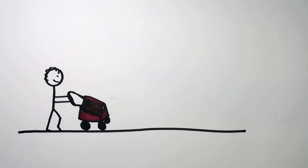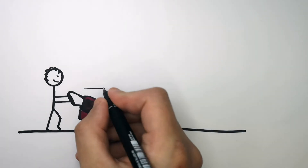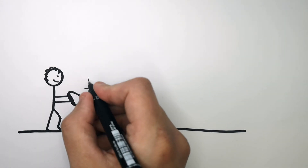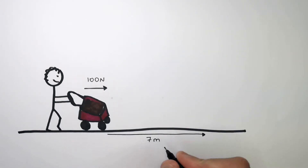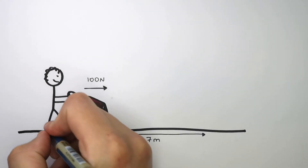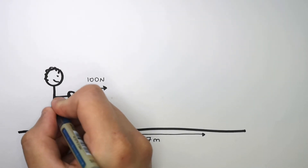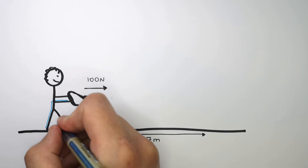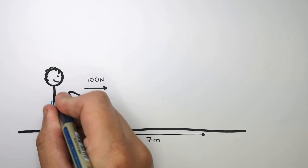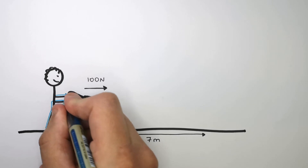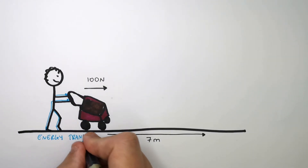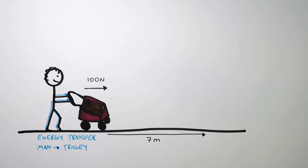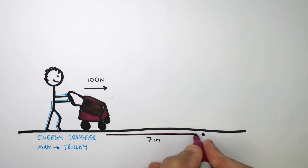This person is pushing a wheelbarrow full of mud. They've applied a 100 newton force to move it 7 meters. To apply a push force to this wheelbarrow, the man needs to transfer energy from his chemical energy store to the kinetic energy store of the wheelbarrow. Therefore, energy transferred is work done, and the energy transferred from the man to the trolley is the work done in joules — the energy transferred to move it 7 meters.